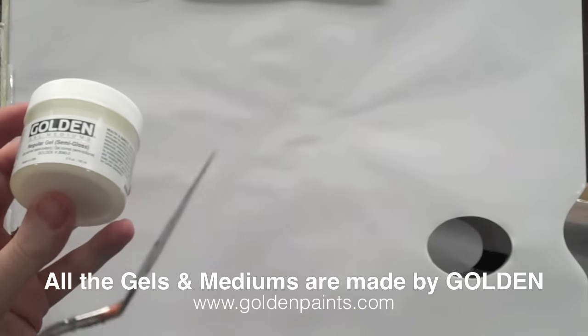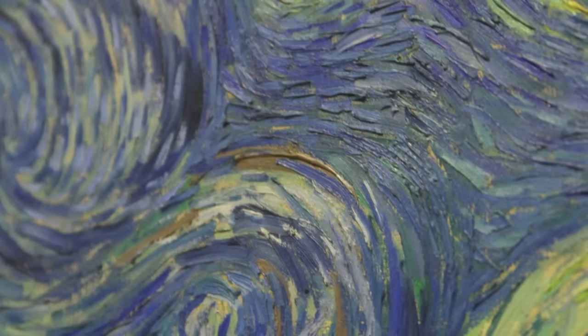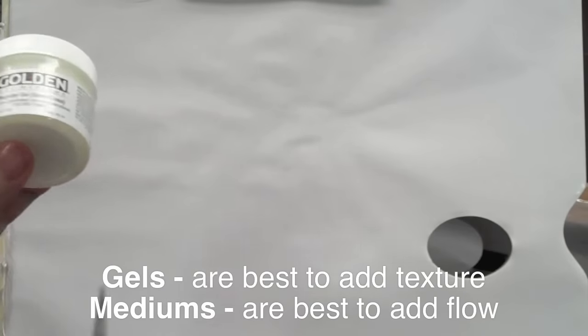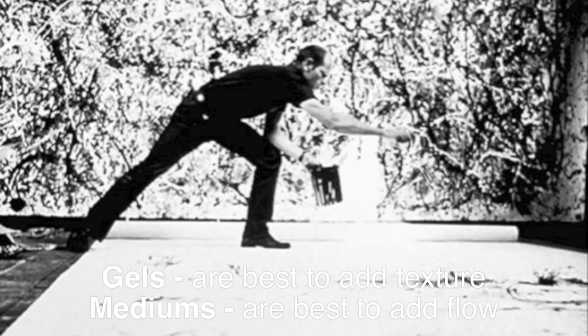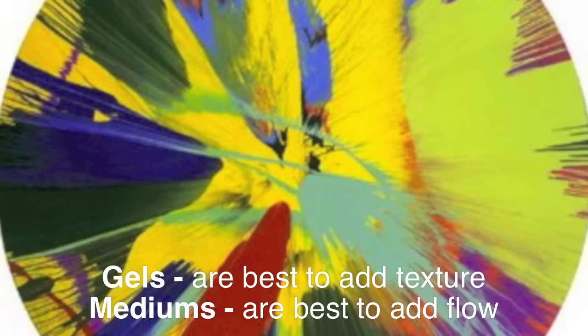If you're a painter and you want to keep the texture and the brush strokes that are in the paint, then a gel is often your best bet. If you like pouring acrylics and keeping them thin and getting them to self-level when you paint them out, then a medium is often best to use.